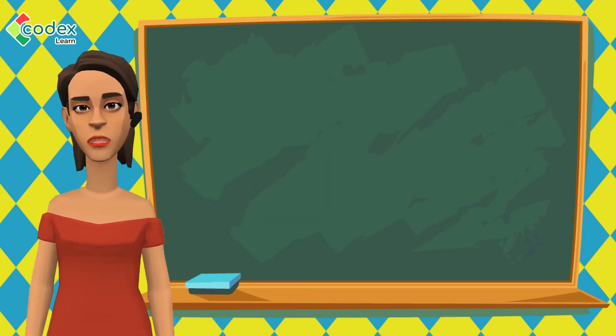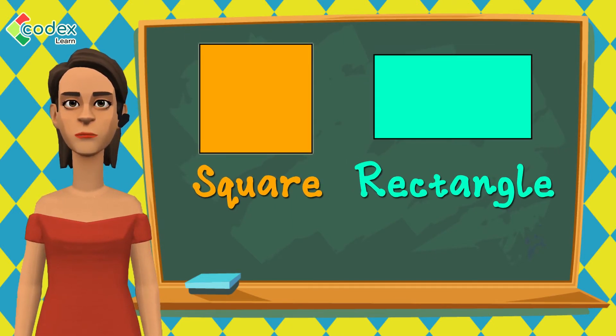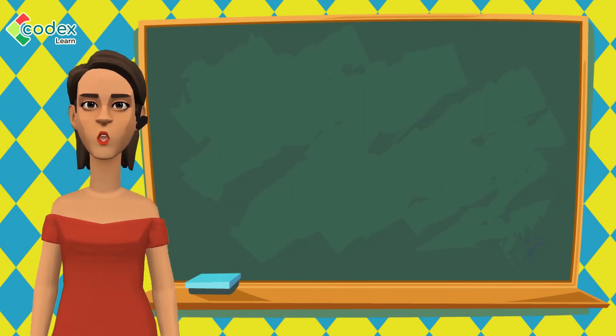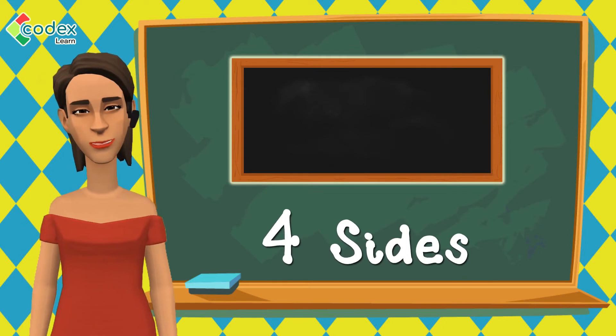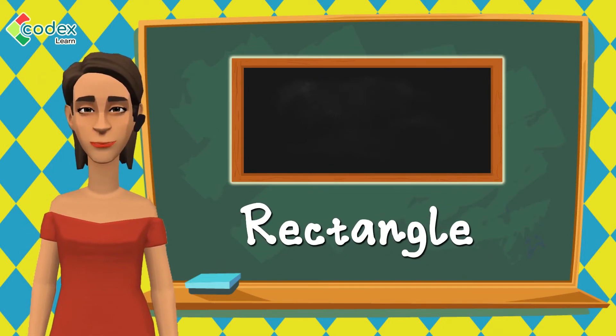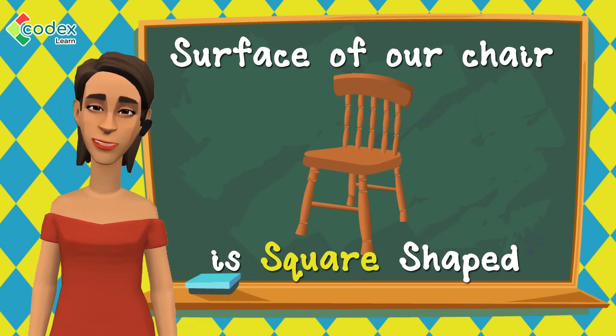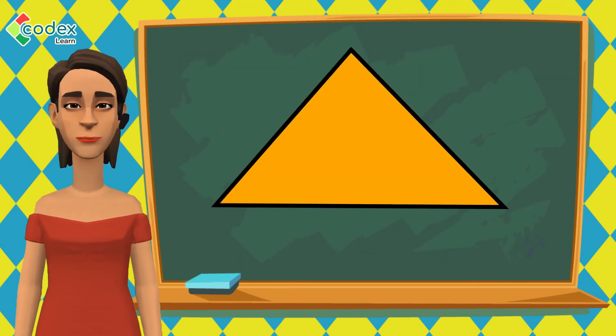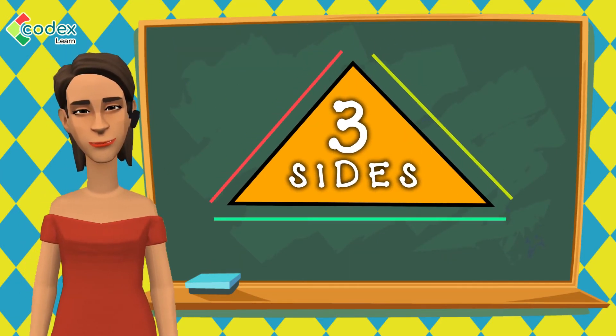If you remember, I told you in the last lesson that a square and a rectangle have four sides. Unlike a blackboard which has four sides and is a rectangle, or the surface of our chair is square-shaped and has four sides, a triangle has only three sides.